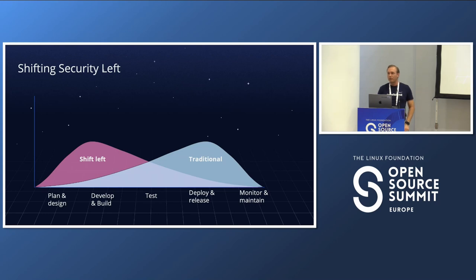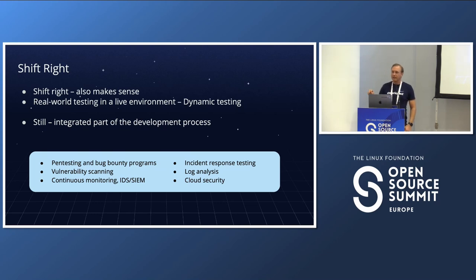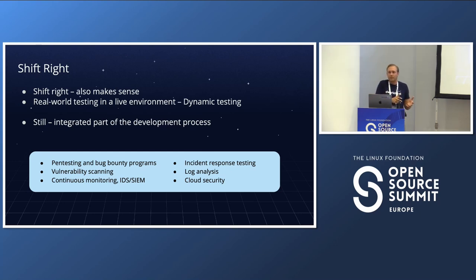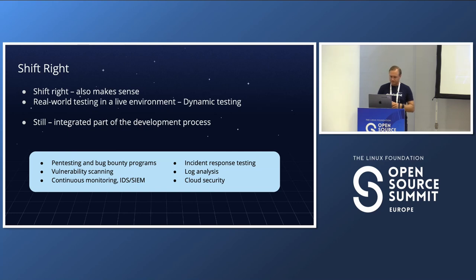This doesn't mean we stop doing things later — we just try to do them as soon as possible. Shift-right has also become a popular term because for dynamic testing, it sometimes makes more sense to do it in a live environment than in staging, since there will be more and different usage patterns in a live environment.